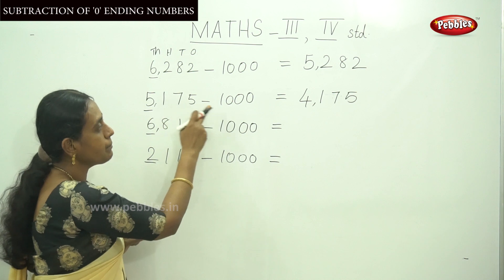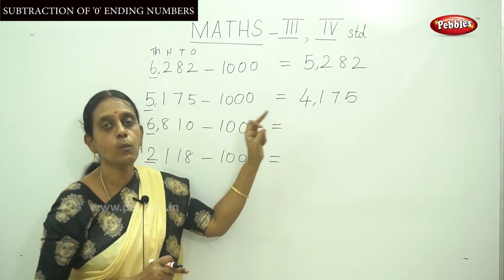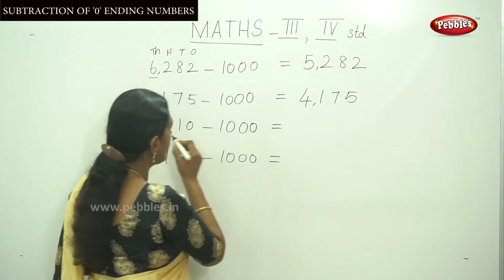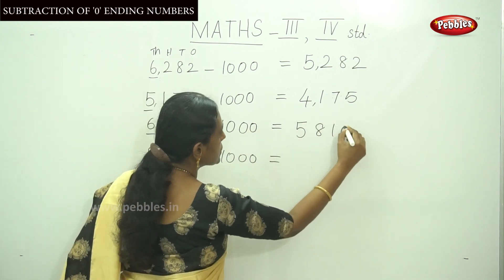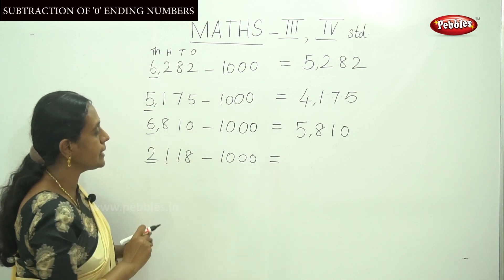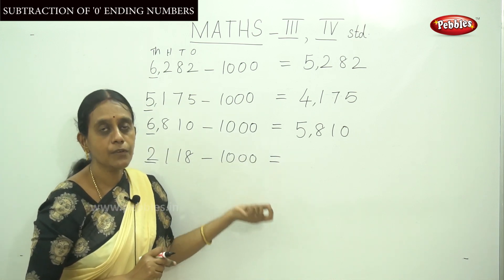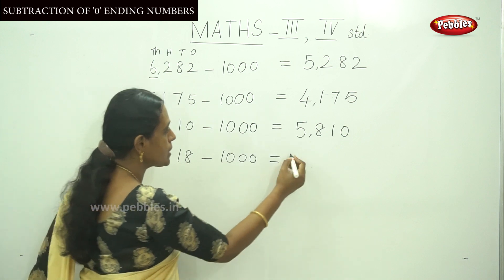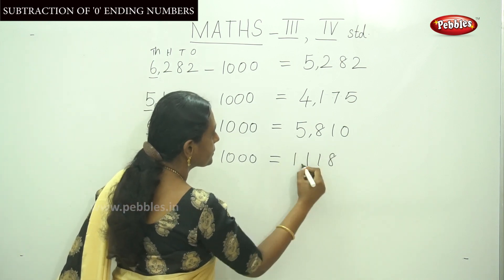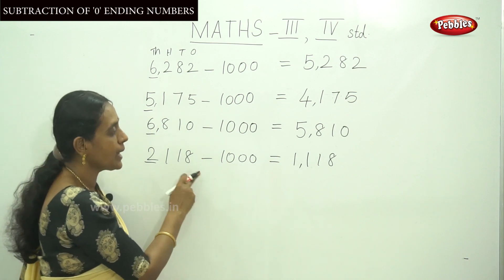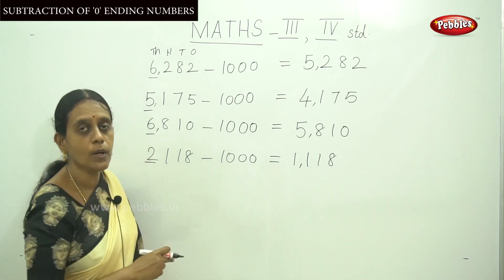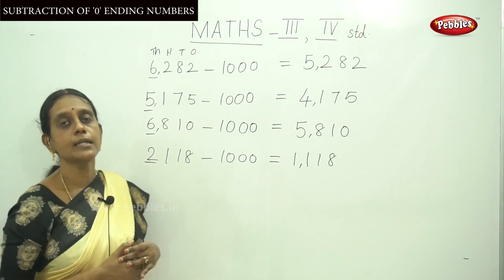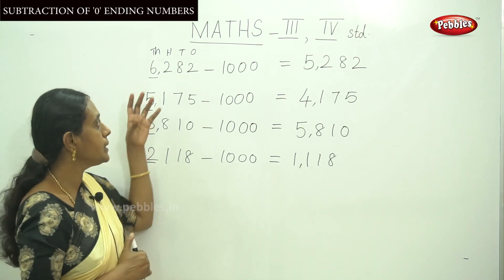So 5175 minus 1000, answer will be 4175. And for 6810 minus 1000, the thousands digit is 6, and the before number is 5, so 6810 minus 1000 equals 5810. And for 2118 minus 1000, the thousands digit is 2 and the before number is 1, so 2118 minus 1000 equals 1118. This is a simple way to subtract tens, hundreds, and thousands from the minuend.